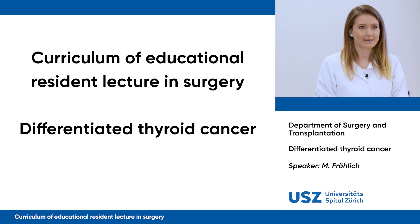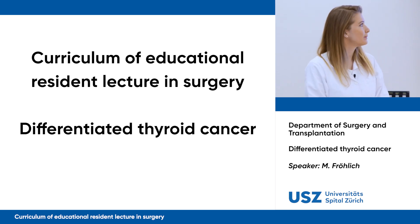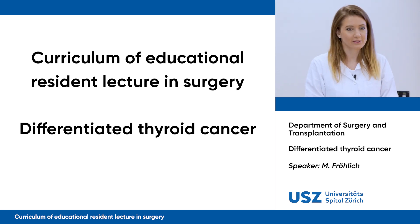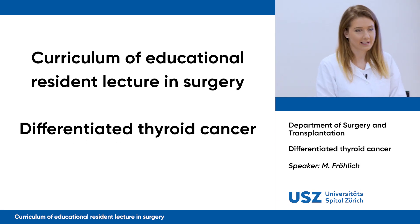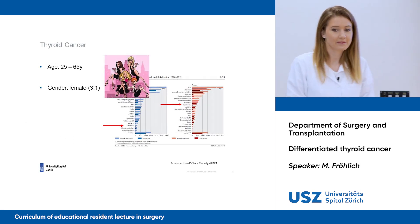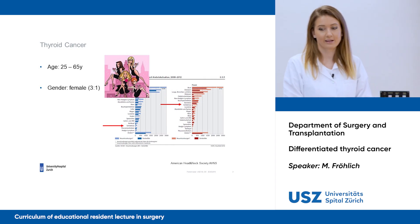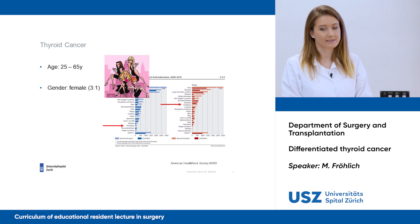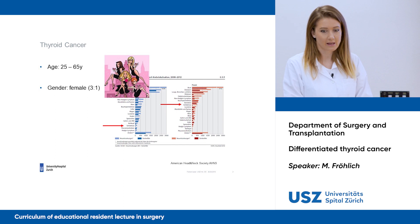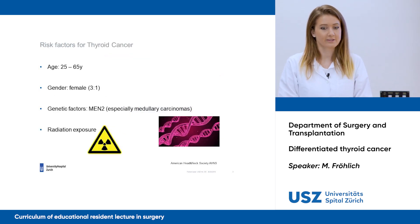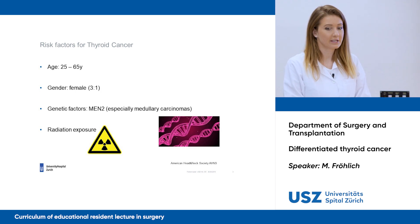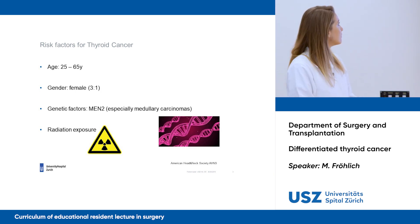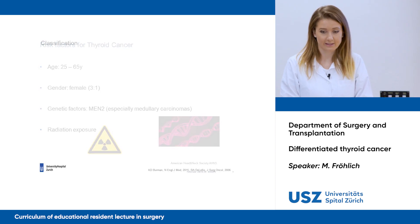Good morning everybody. As Dr. Vettel already told, we will have a short overview today of differentiated thyroid cancer. The incidence of thyroid cancer appears mostly between 25 and 65 years and is higher in the female population — three times higher in female population. Risk factors include genetic factors such as MEN2 syndrome, or radiation exposure, which seem to increase the risk of thyroid cancer.